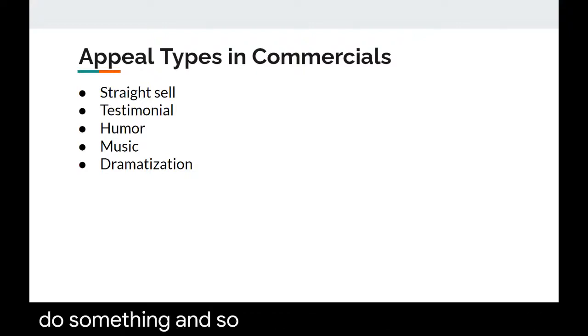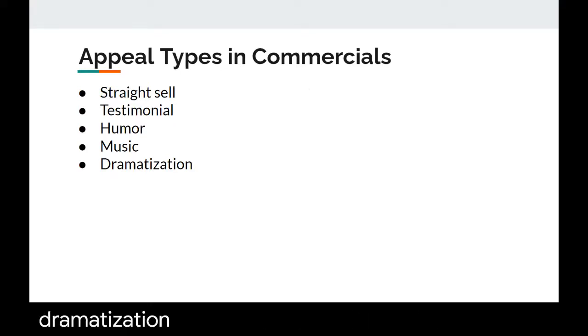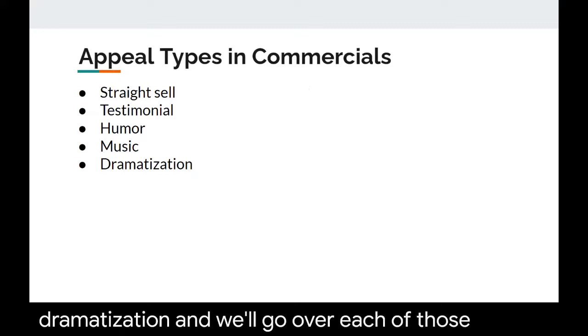Commercials tend to use five different types of formats to appeal to those motives and get the audience to act in whatever way the commercial intends. The first is a straight sell, followed by a testimonial, humor, music, and dramatization. We'll go over each of those in more depth.